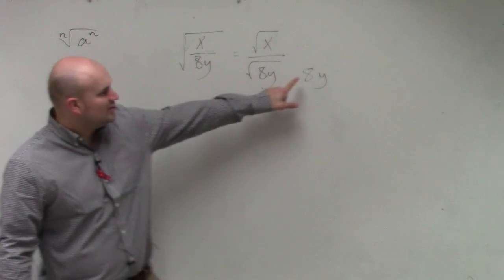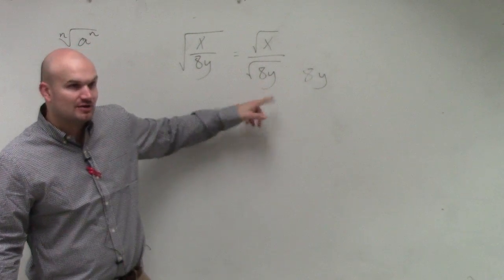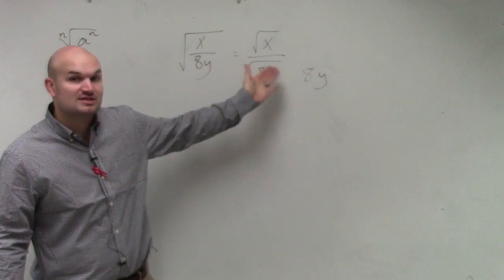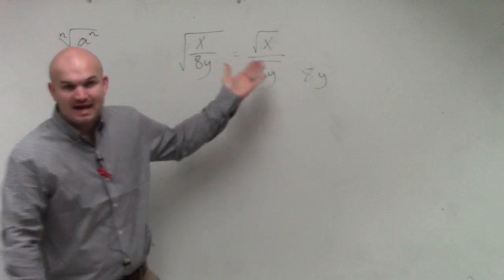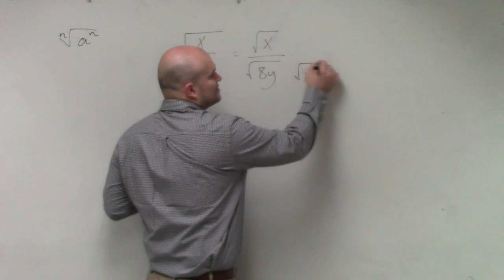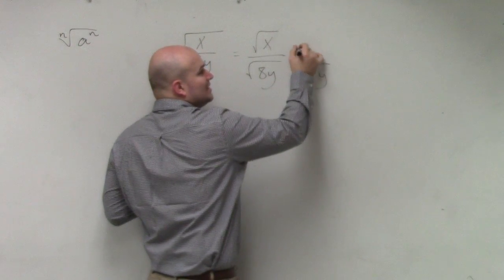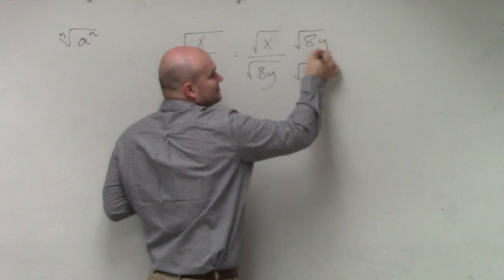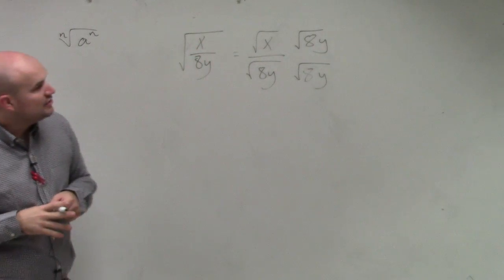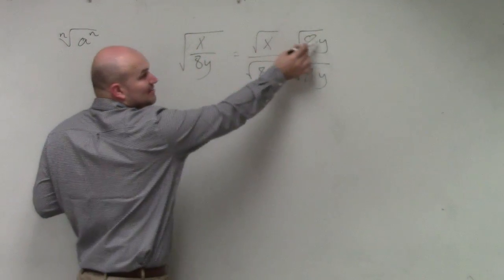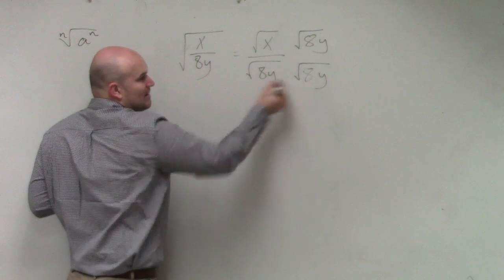However, the problem is you can't multiply just a number into the radical. The only way we can multiply radicals is as long as they have the same index. So I have to rewrite this as the square root of 8y. And then whatever I do in the denominator to produce equivalent fractions, I have to multiply in the numerator.